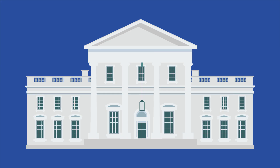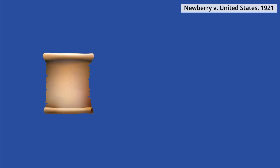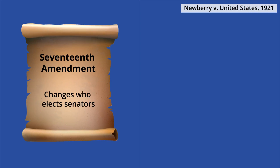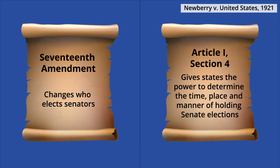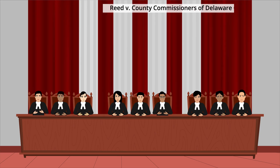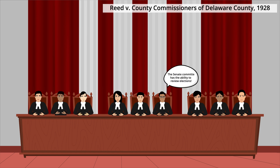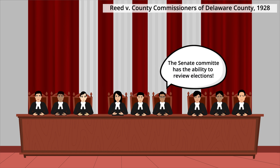Since ratification, there have been several Supreme Court cases further clarifying the 17th Amendment's powers and limitations. In 1921, in Newbury v. United States, the court noted that even though the 17th Amendment changed who elects Senators, it did not change Article 1, Section 4 of the Constitution, which gives states the power to determine the time, place, and manner of holding Senate elections unless alterations are made by Congress. In 1928, in Reed v. County Commissions of Delaware County, the Supreme Court held that the 17th Amendment acknowledges a federal right to elect Senators and that the Senate is authorized to protect these rights, which means that a Senate committee has the authority to judge elections, votes, and qualifications of members.